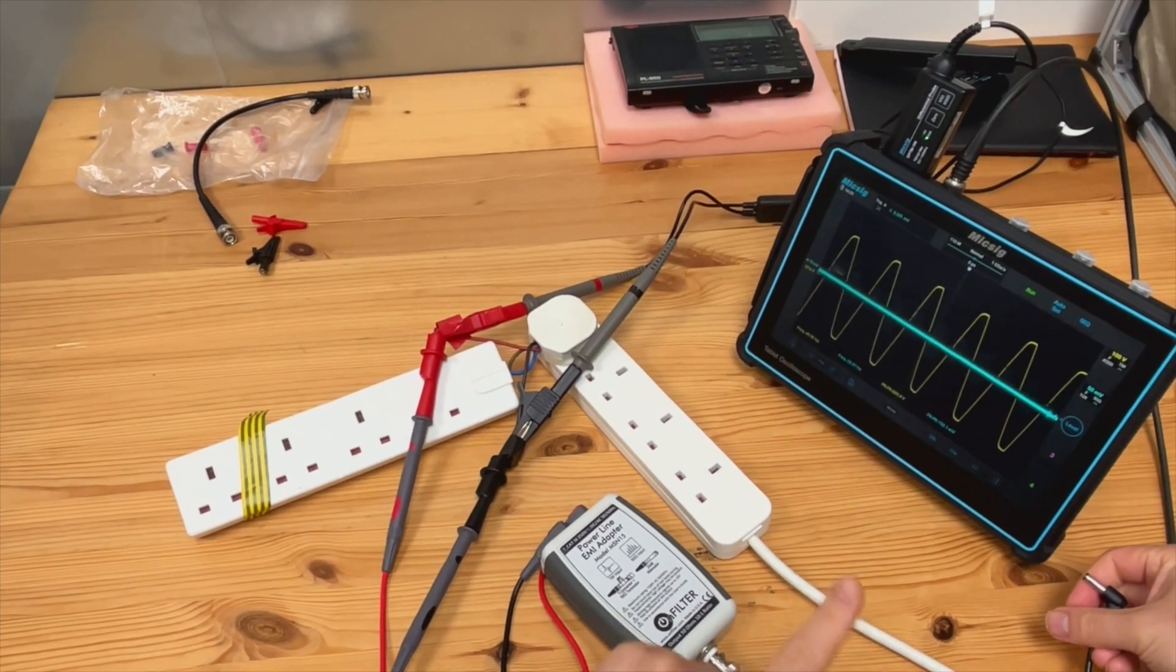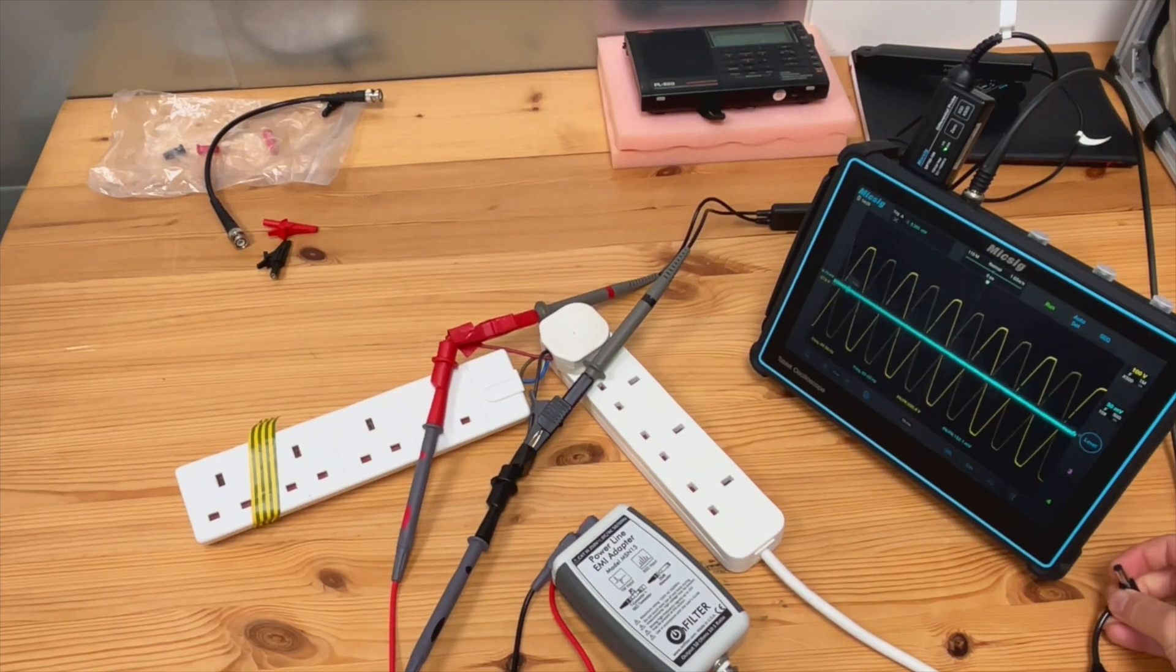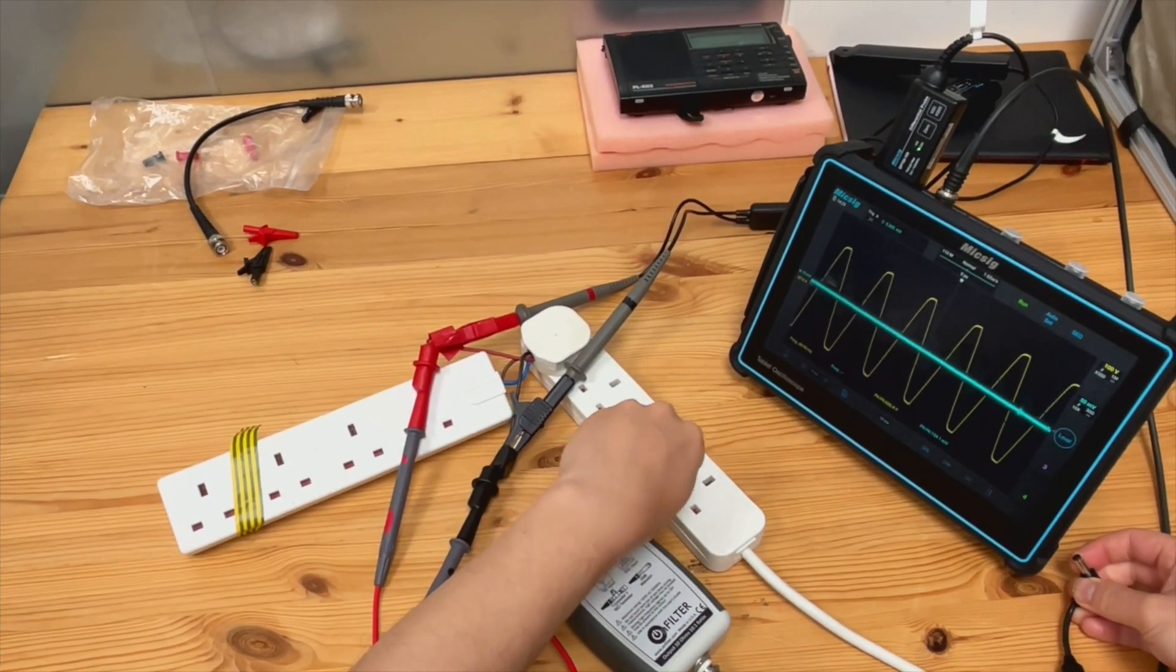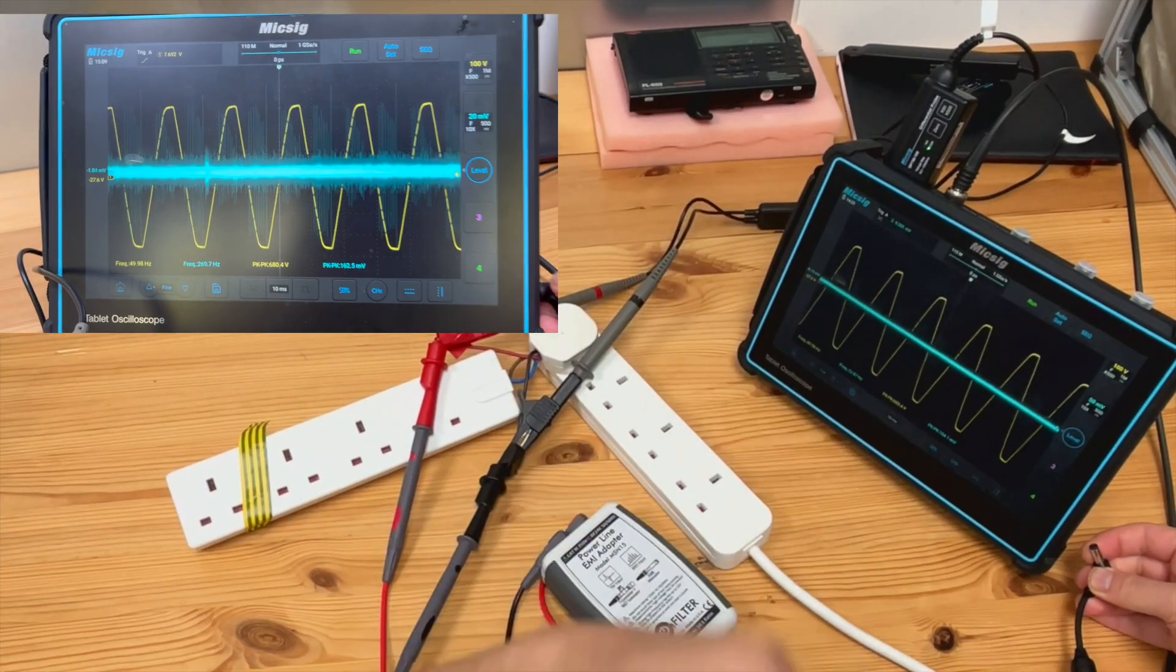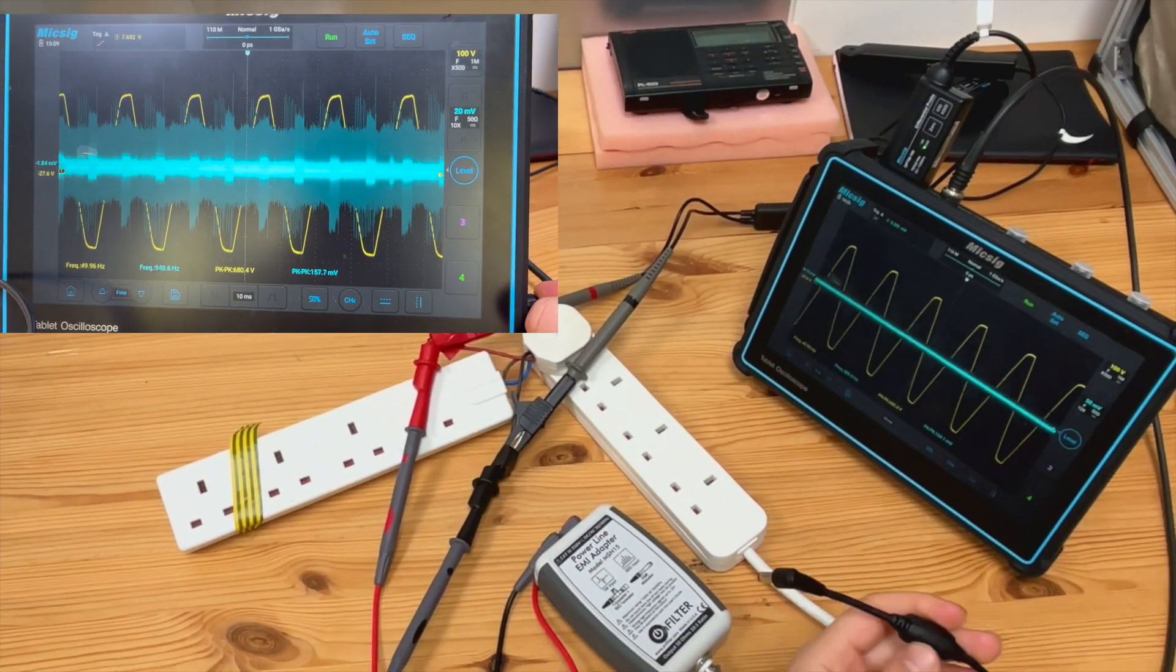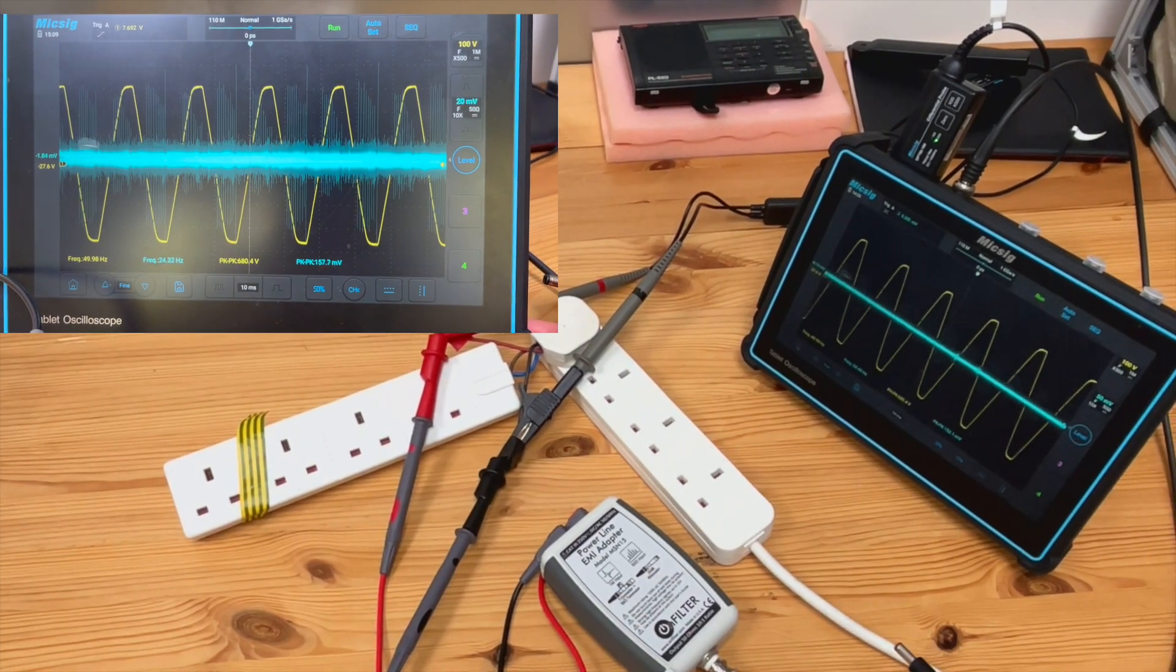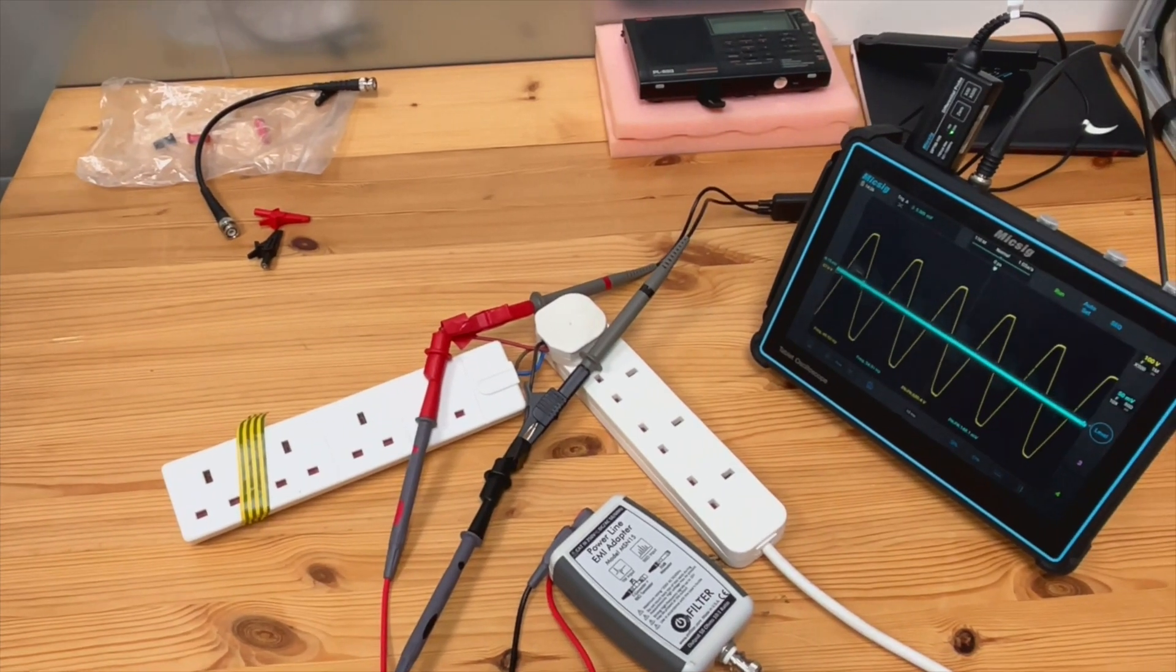Before we disconnect this mains connection, you're measuring basically into the same mains network, and this is powered by this AC to DC switching mode power supply. Therefore, you pick up some noise generated by the AC to DC switching mode power supply. Therefore, there's a ground loop. So you need to break that first.